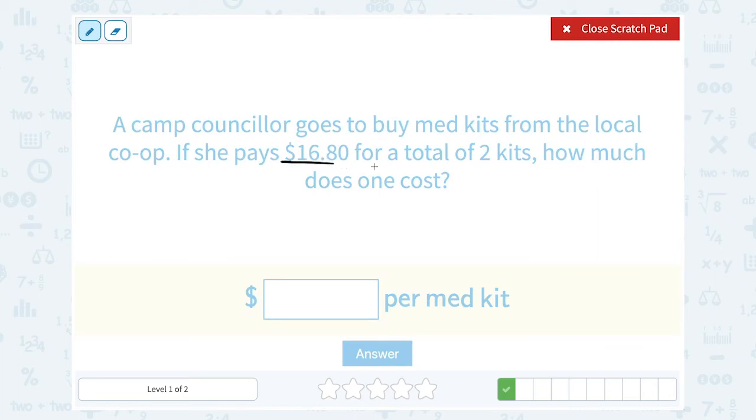If we know the price for two kits, and we want to know the price for one kit, we would have to divide. $16.80 divided by two.